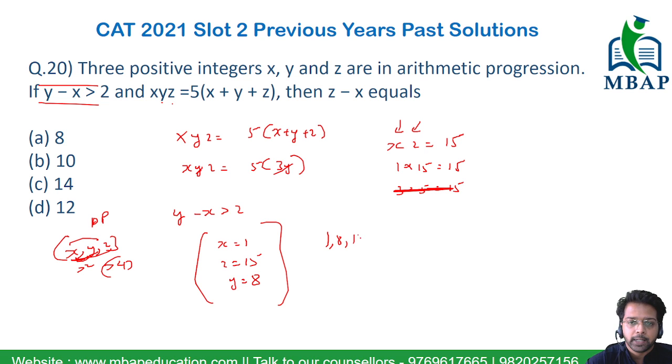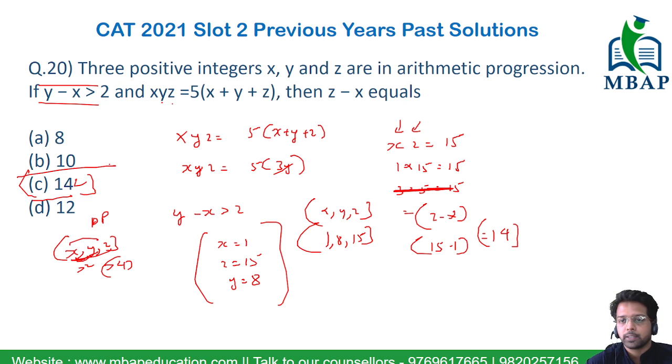So 1, 8 and 15 are the possible values of x, y and z. The question is about finding the difference z minus x. z minus x will be 15 minus 1, which equals 14. Easy question. The answer for this question would be option number C.